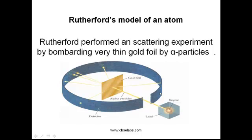This is the figure which shows the layout of the experiment he performed. This is the source which he used to produce the alpha particles, and here is the beam of alpha particles. This is the gold foil, and this thin strip is the detector. It detects the alpha particles after getting scattered by the gold foil.